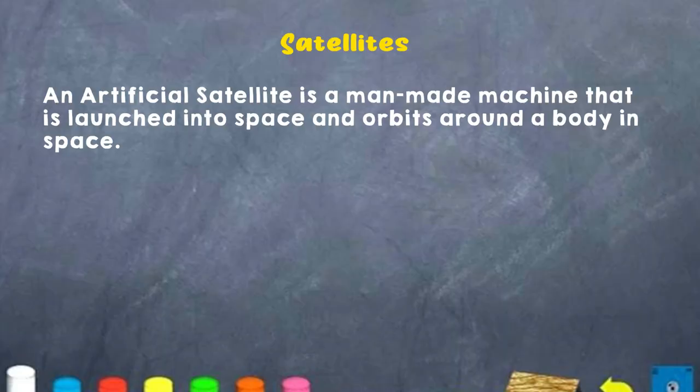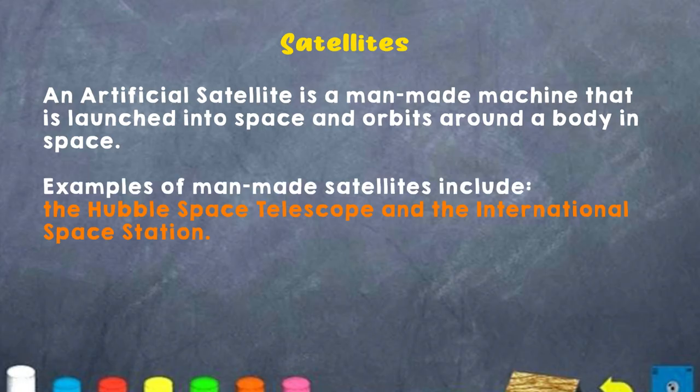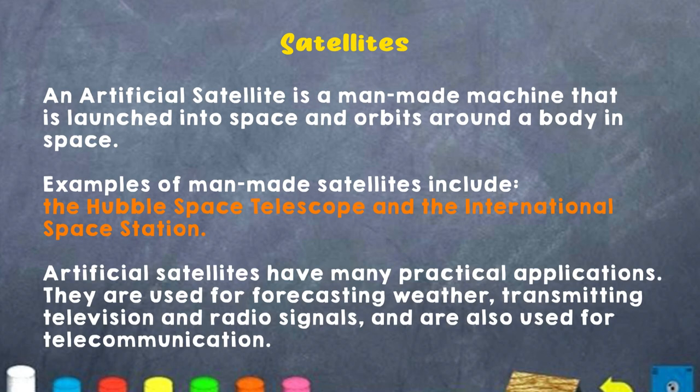Now boys and girls, let us talk about artificial satellites. An artificial satellite is a man-made machine that is put into the Earth's atmosphere. Some examples of man-made satellites are: one, the Hubble Space Telescope, and two, the International Space Station. Artificial satellites have many practical applications — they are used for forecasting weather, transmitting television and radio signals, and also used for telecommunications.